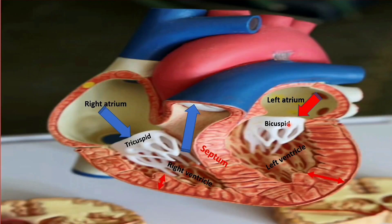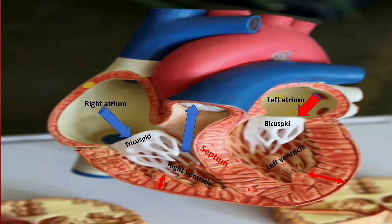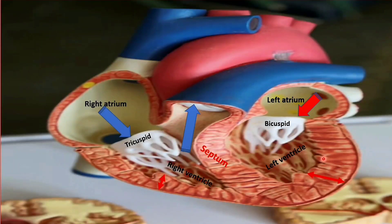From the left atrium, oxygenated blood comes to the left ventricle. When the left ventricle creates contraction pressure, the wall of the left ventricle is much greater in thickness than any other walls. This is because the left ventricle has to exert maximum pressure — maximum contraction — so that oxygenated blood may reach different parts of the body. The wall of the left ventricle is quite thicker because it has to give maximum contraction pressure.